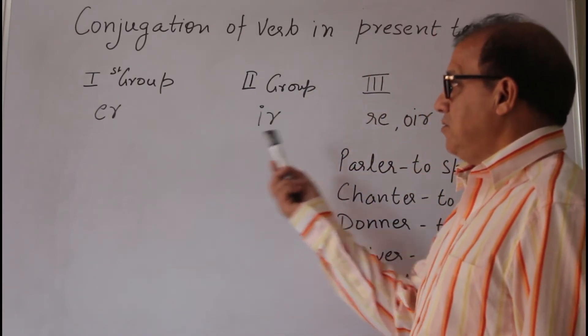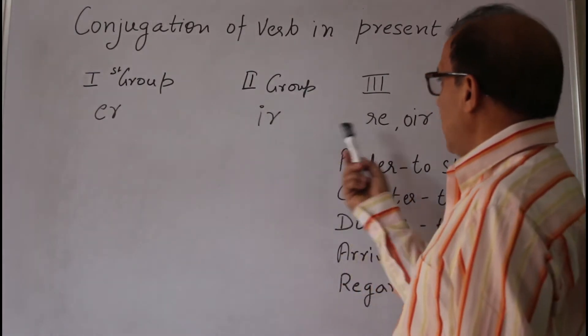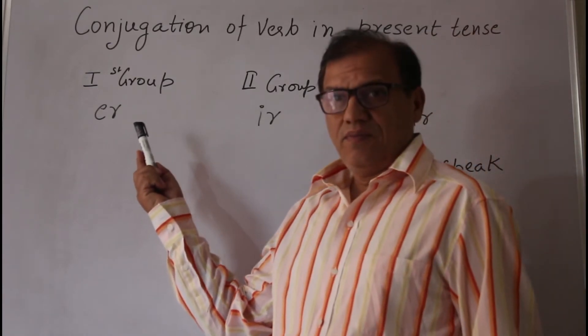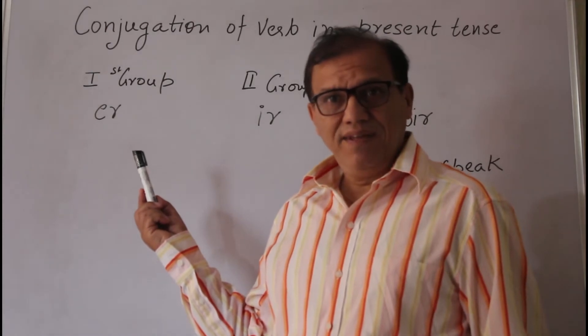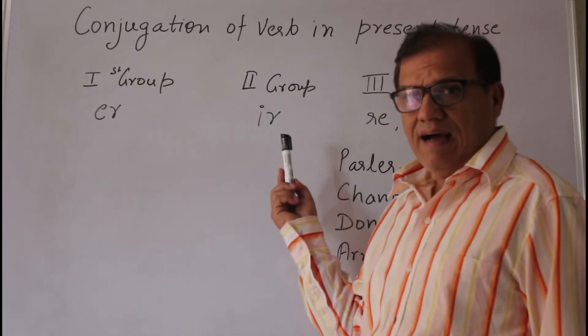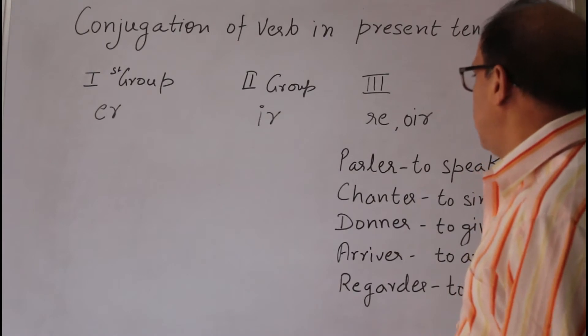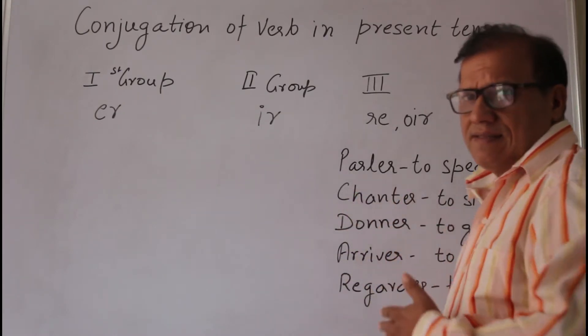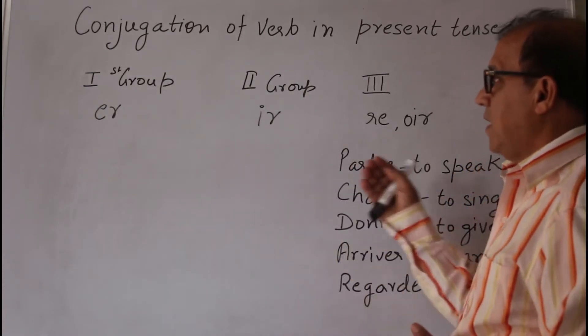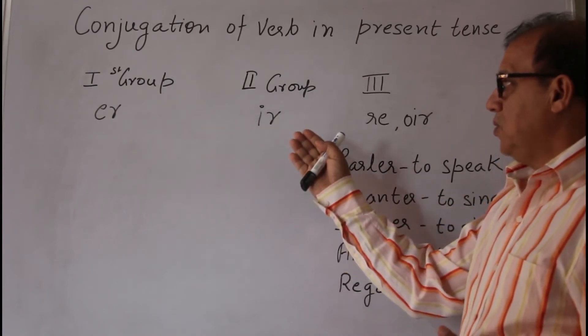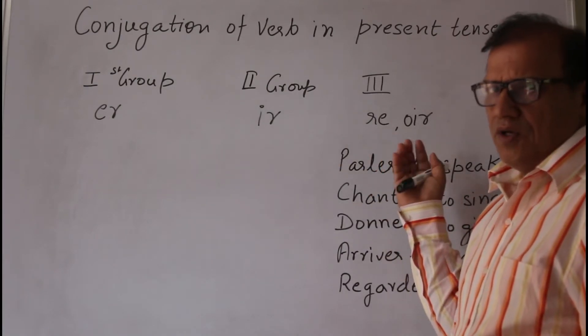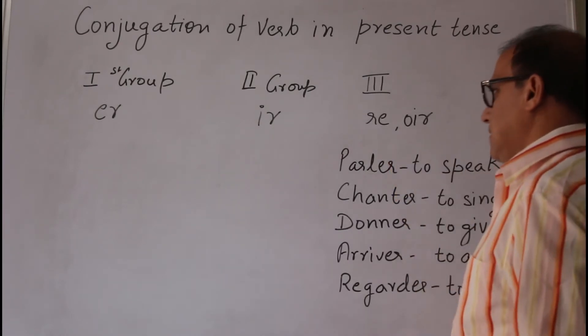The verbs are divided into three groups: one, two, and three. In group first, all the verbs which are ending with ER will come in group first. In group second, verbs which are ending with IR. Whereas the verbs which are ending with RE or OIR, they are in group three. So there are three groups: group one ER ending verbs, group two IR, and group third where the verbs are ending with RE or OIR.